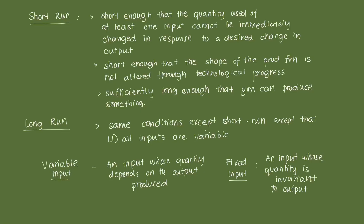Fixed inputs are the opposite — their quantity is invariant to output. To produce one loaf of bread, you need an oven; to produce two loaves, you may need that same oven. The quantity of the oven doesn't change — it's relatively fixed regardless of production scale. Whether you produce one loaf or a hundred loaves, you still need that oven, and the cost of buying it is there regardless of how much you produce.